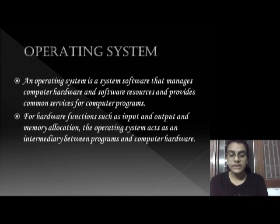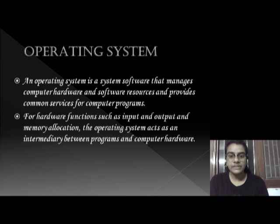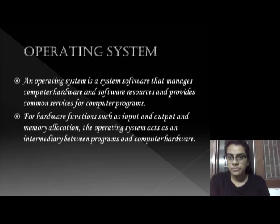Firstly, we'll learn what an operating system is. An operating system is a system software that manages computer hardware and software resources and provides common services for computer programs. Operating software is a platform that provides applications and software to run. If there is no operating software, applications or software will not run. For hardware functions such as input and output and memory allocation, the operating system acts as an intermediary between programs and computer hardware.